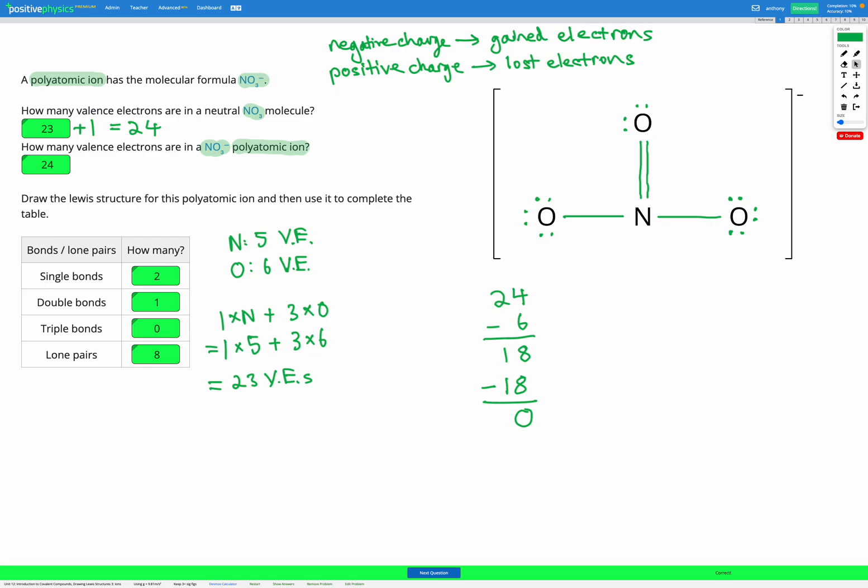So as you can see, when we're drawing Lewis diagrams for polyatomic ions, it works exactly the same way as for neutral molecules. The only difference is, right at the beginning, when we calculate the number of electrons provided by each atom, we need to add or subtract electrons based on the charge. If it's negatively charged, we gain electrons. If it's positively charged, we lose electrons.